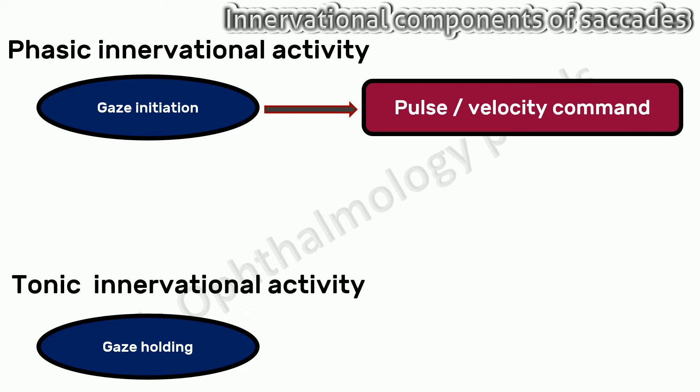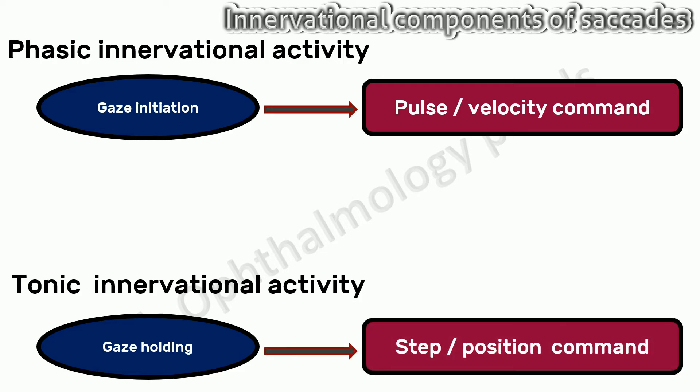Tonic innervational activity continues after the saccade is over, to enable the eye to hold gaze in the new position against the elastic forces of the orbit — that is, gaze holding. The command for gaze holding is termed the step or position command.